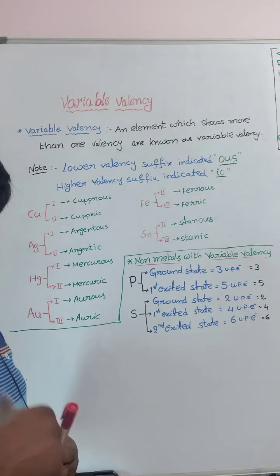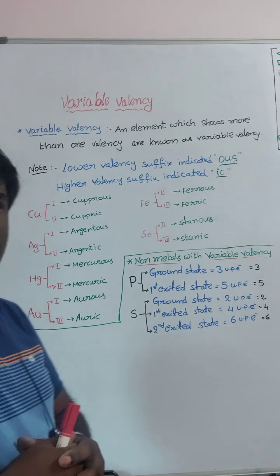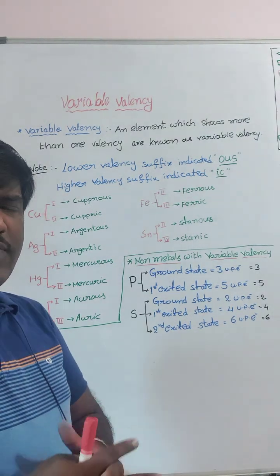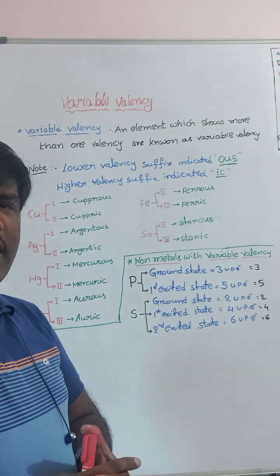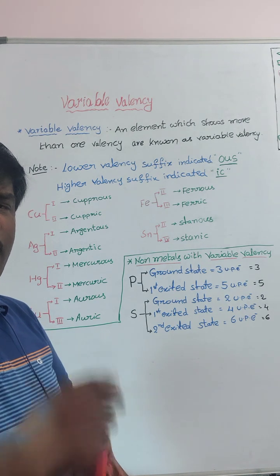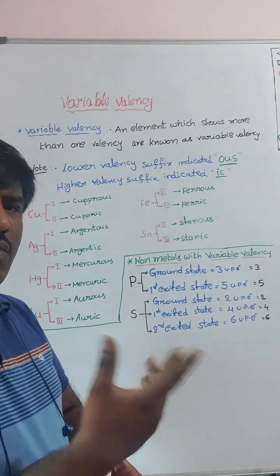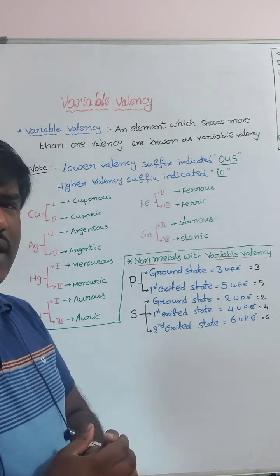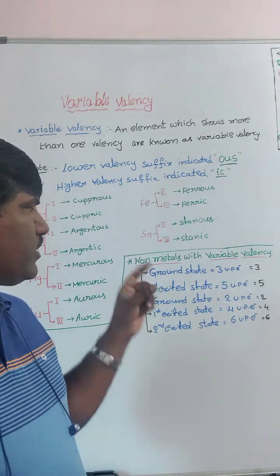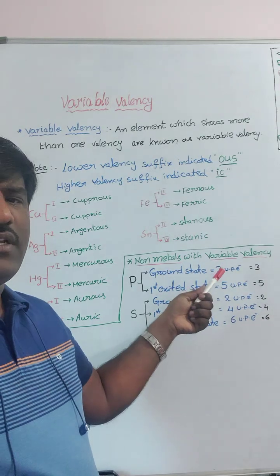Some non-metals also exhibit variable valency. When they show variable valency, we generally write the ground state electronic configuration and observe how many unpaired electrons are present — that directly gives the valency. In the ground state, phosphorus has three unpaired electrons.